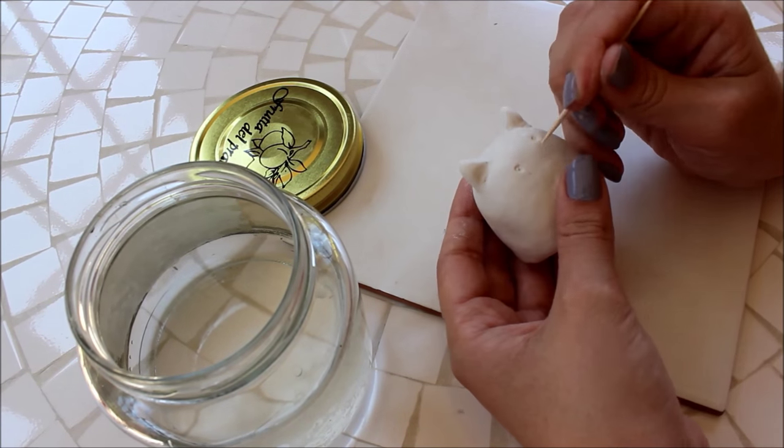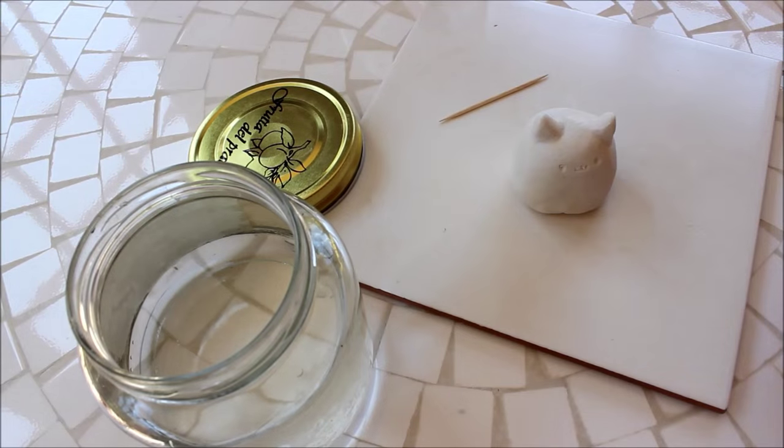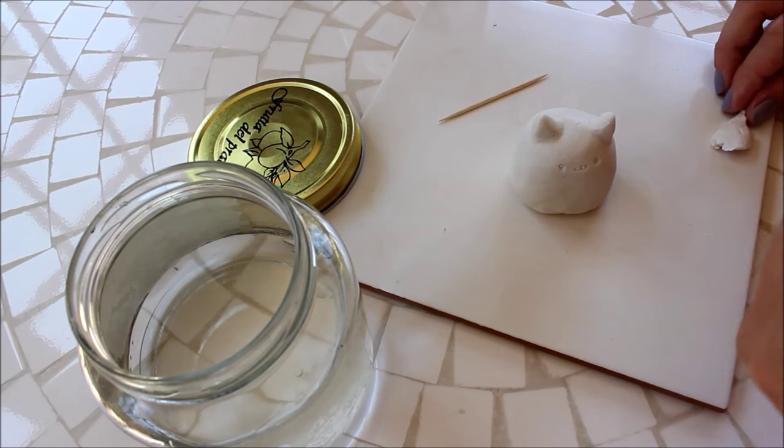Use a toothpick to mark where the eyes should be and add a small indent for the mouth and then add two balls of clay for the eyes.